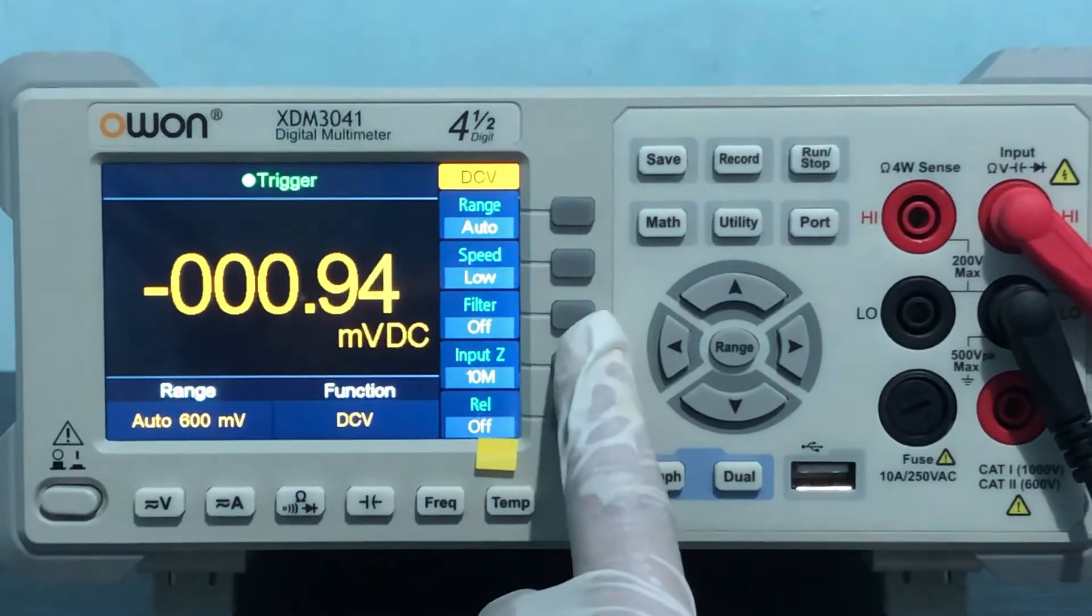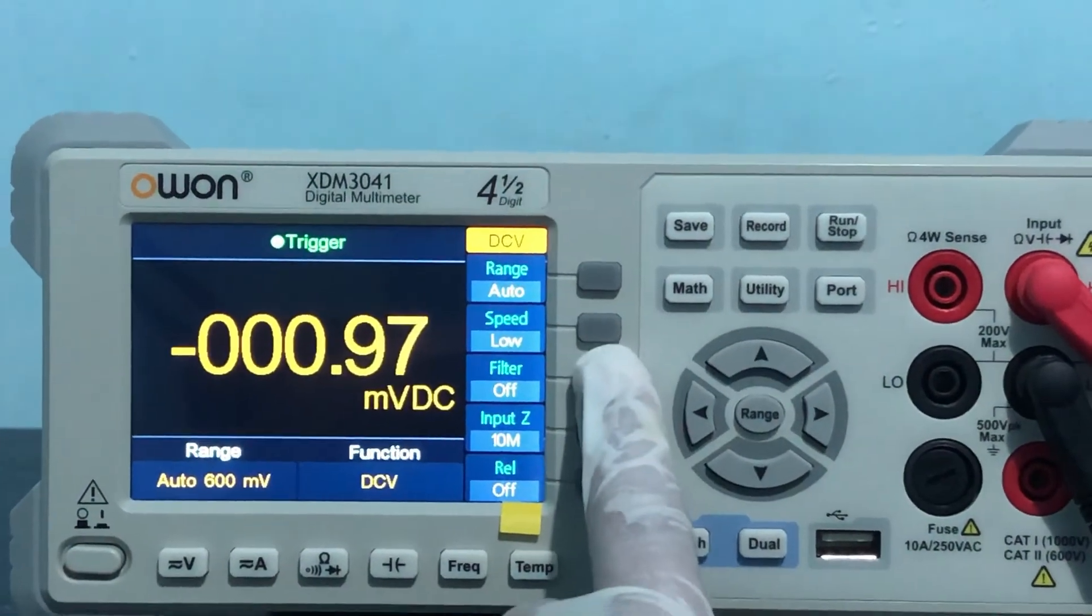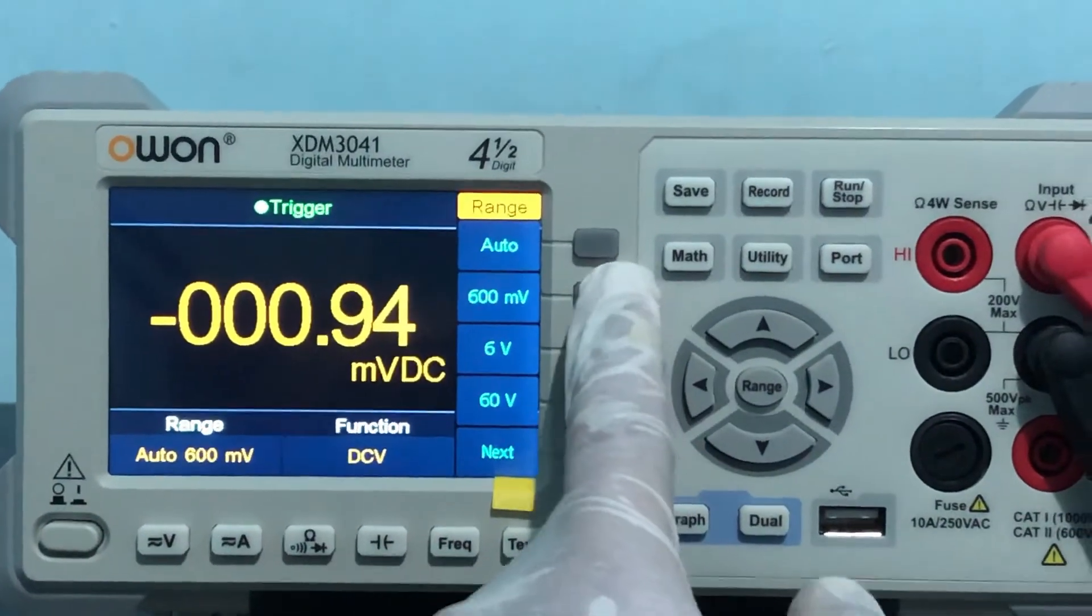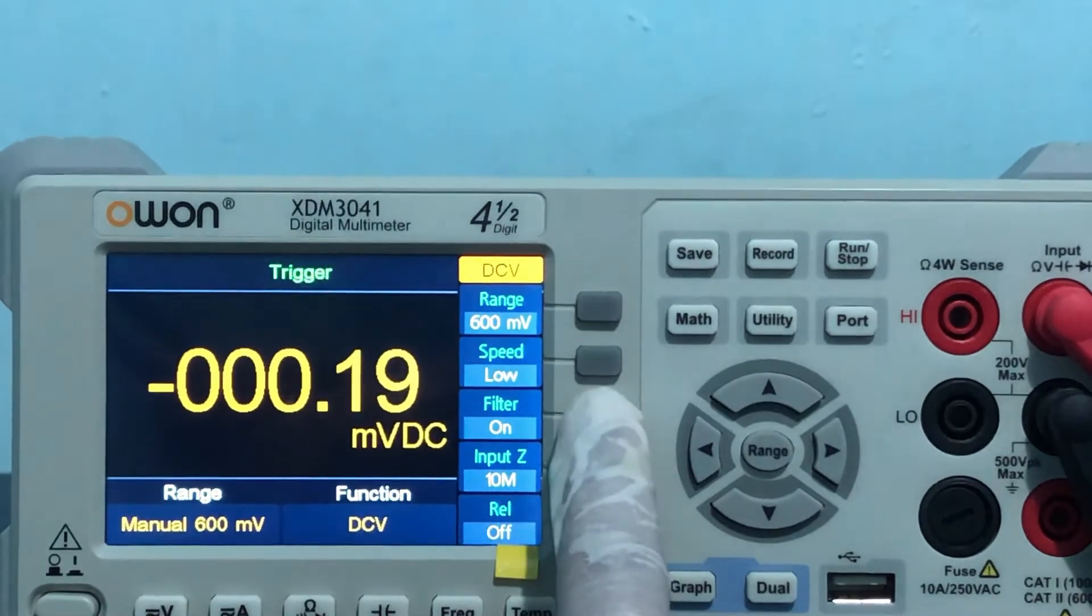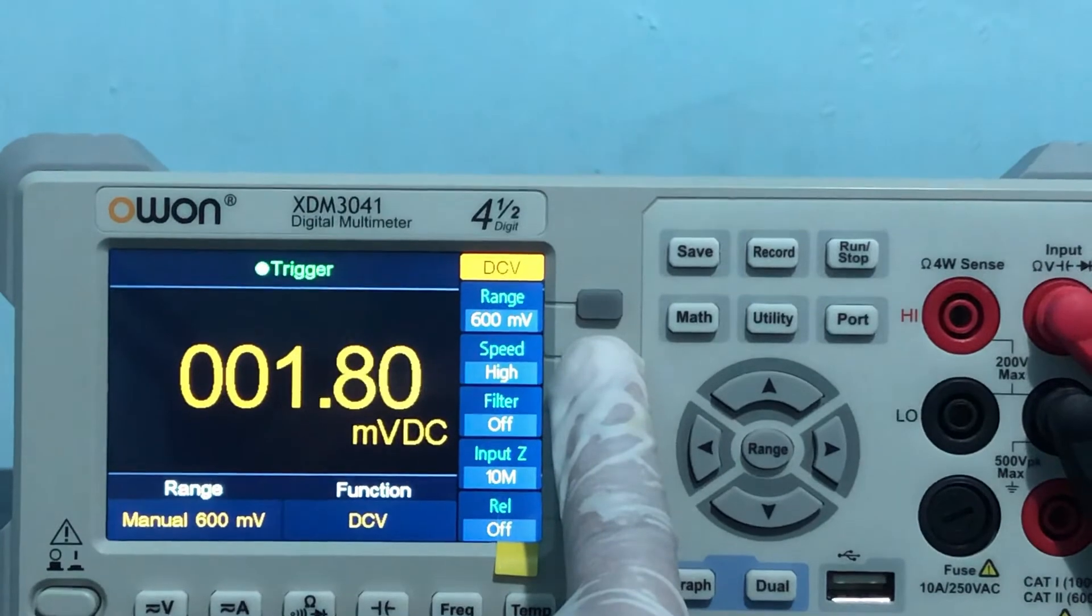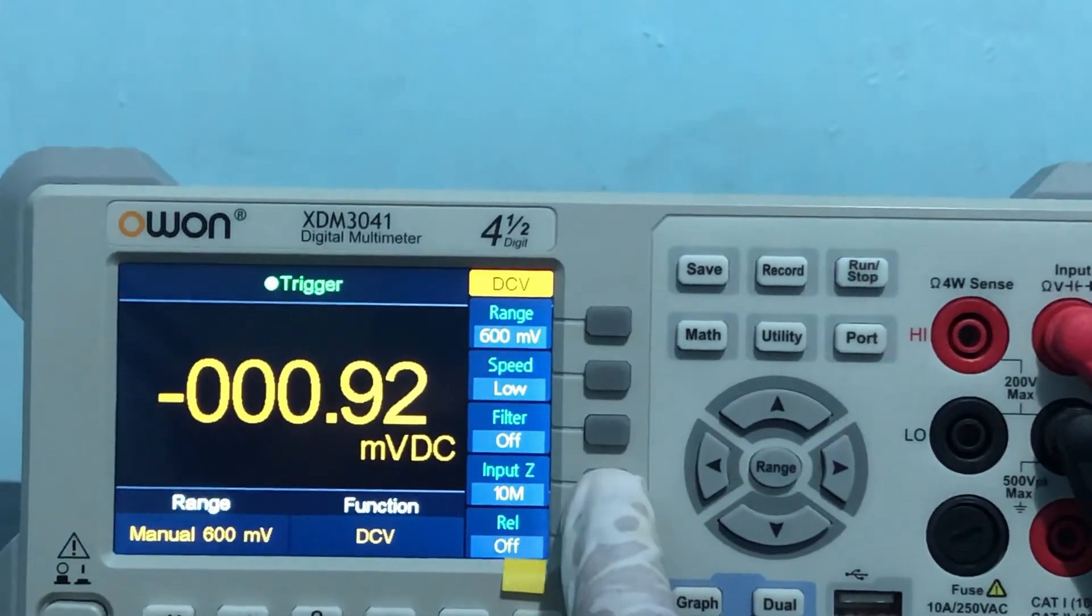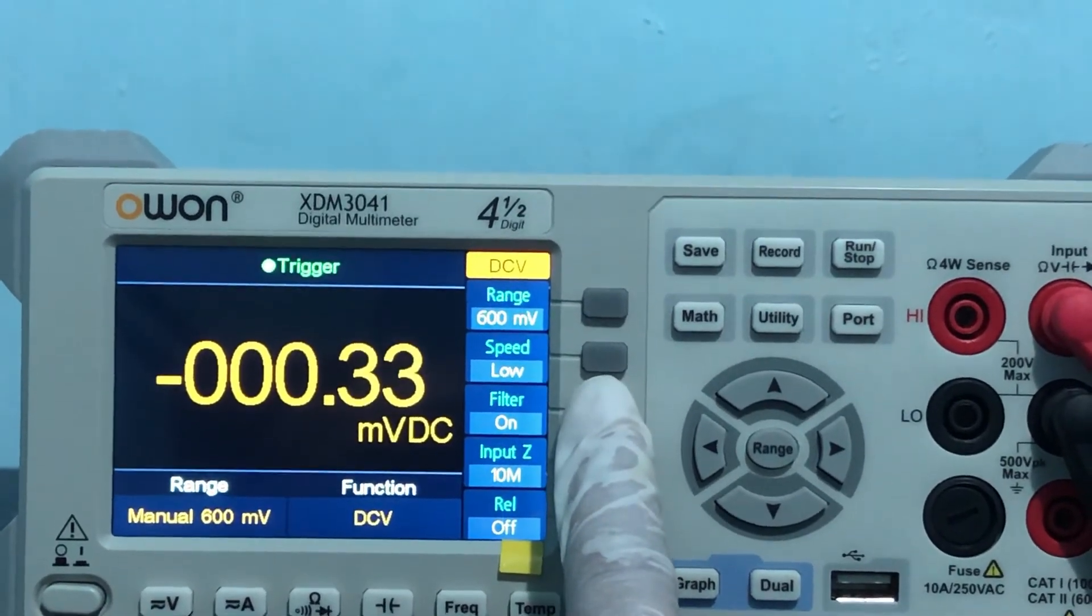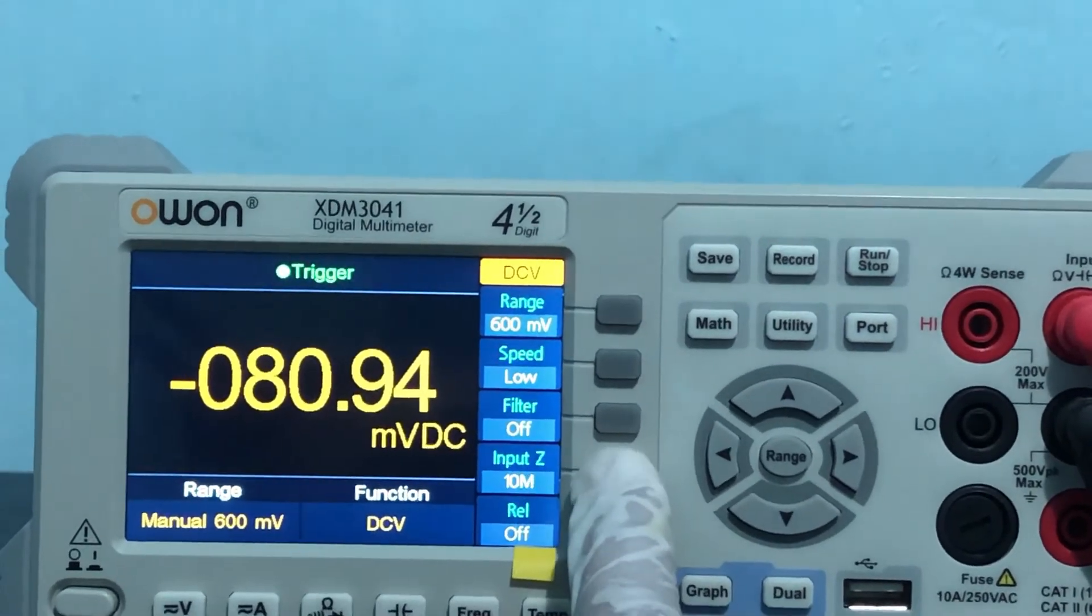During the measurement you can check the menu selection key and set up the instrument for your desired result. You can check the range of measurement, the filter, the speed of measurement. You can turn on the low pass filter so high frequencies are rejected. You can set the input impedance.